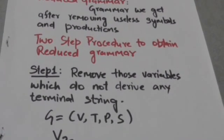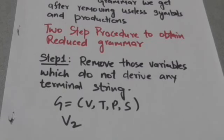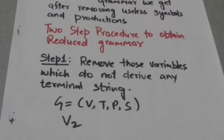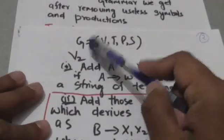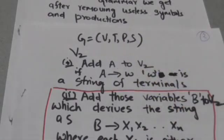There is a two-step procedure to obtain the reduced grammar of a given grammar. Step one: remove those variables which do not derive any terminal string, and remove those productions which involve these variables. Now, how we can remove such type of variables and productions? Suppose a grammar G is given to us, and we have to remove those variables which do not derive any terminal strings, and those productions which involve these variables.